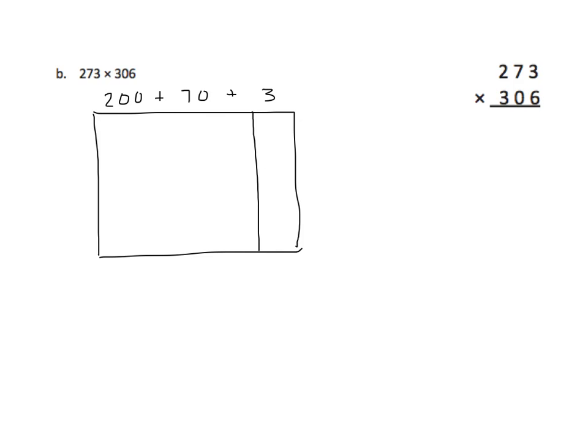I have two hundreds plus seventy plus three ones. I'll draw lines to partition into three columns. Now the second factor is interesting: I have six in the ones place, I have nothing in the tens. So I don't need another partition for the tens. So we have six plus three hundred — only two rows. Two rows means we only have two partial products. I could put zeros in there for the zero tens across all the columns, but that's not necessary. So let's solve.